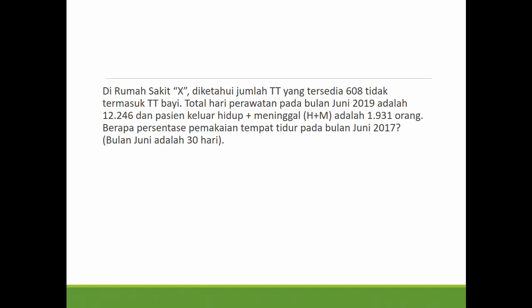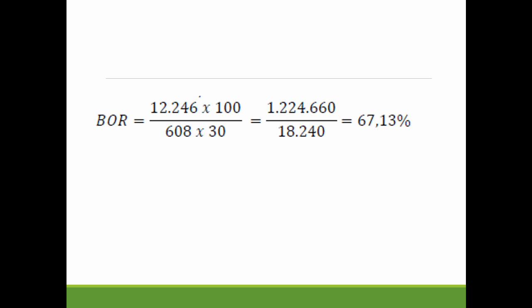Di rumah sakit X diketahui jumlah tempat tidur tersedia 608, tidak termasuk tempat tidur bayi. Total hari perawatan pada bulan Juni 2019 adalah 12.246, dan pasien keluar hidup plus meninggal adalah 1.931 orang. Berapa persentase pemakaian tempat tidur pada bulan Juni? Bulan Juni adalah 30 hari. Maka BOR = 12.246 × 100% ÷ (608 × 30) = 1.224.660 ÷ 18.240 = 67,13%. Menurut Depkes ini adalah ideal, dan menurut BG ini juga ideal.